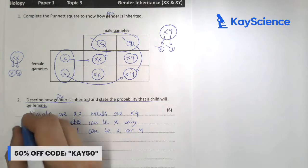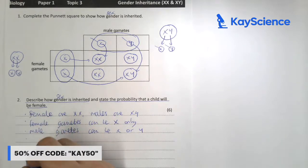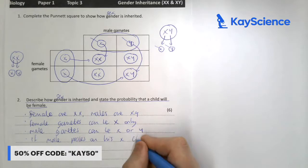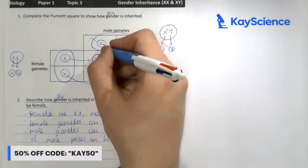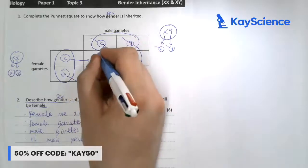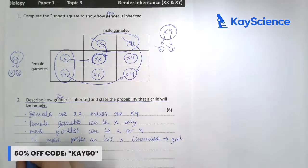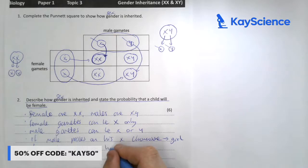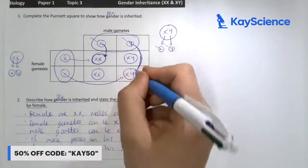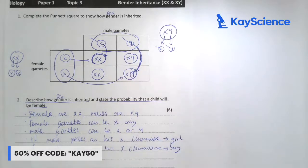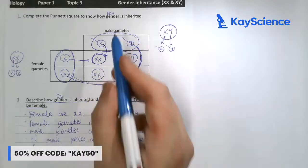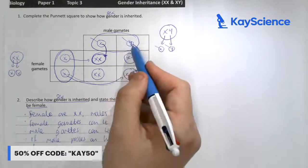So now, if a male passes on his X chromosome, that means that the child will be a girl. If the male passes on his Y chromosome, that means that the child will be a boy. This is because the female can only ever pass on the X chromosome, so it is males that determine the gender.